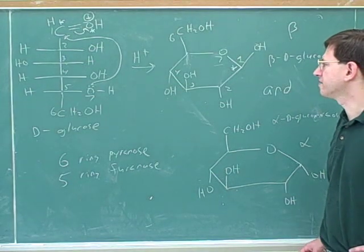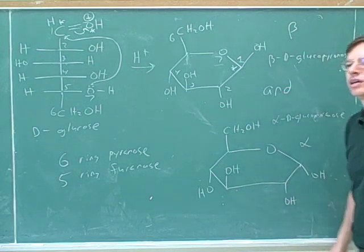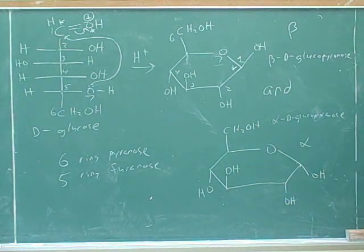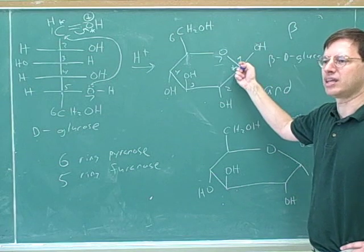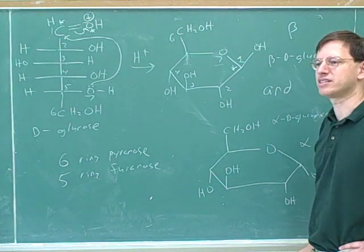Now, what type of functional group did we end up with at this number one carbon? An alcohol. That's right. But what would we call it when we have this and this on the same carbon? Acetal. Yeah. Hemi-acetal because you still have one of the OHs. Hemi-acetal. Good.